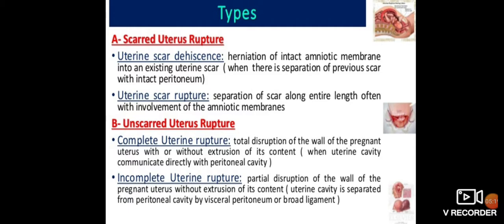There are two types of rupture: incomplete and complete. Scar dehiscence is another type — a herniation of intact amniotic membrane into an existing uterine scar, occurring when there is separation of a previous scar with intact peritoneum. Uterine scar rupture is the separation of a scar along its entire length, often with involvement of the amniotic membranes.